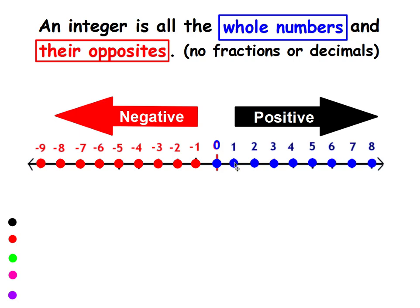So the whole number 1 plus its opposite negative 1, the whole number 2 and its opposite negative 2, all of these are called integers. There are no fractions or decimals in an integer.